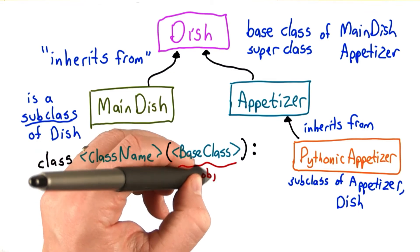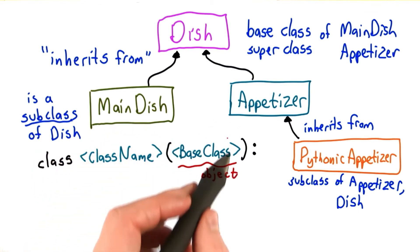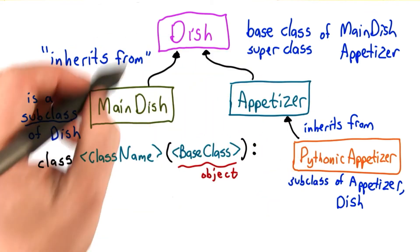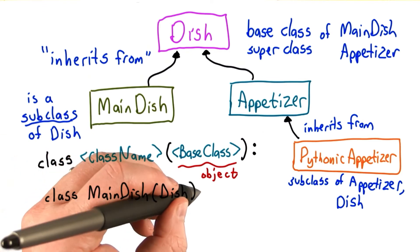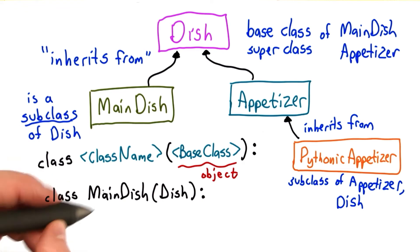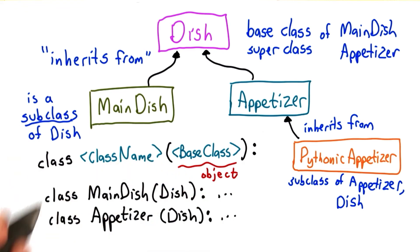So far, we've used object for all of our base classes. But the base class can be any other type. So to get what we've shown here, we would have the main dish have as its base class the dish, and then the definition of the main dish class. And we would have the appetizer have as its base class the dish. And the pythonic appetizer has as its base class the appetizer.